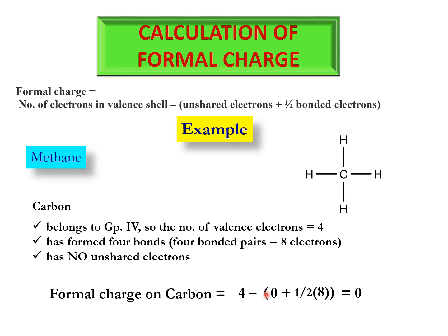All the hydrogens in methane have the same bonding situation as hydrogen in the hydroxyl ion — each has formed one bond. Valence electrons = 1, no unshared electrons, number of bonds = 1. Formal charge = 1 − (0 + 1) = 0. All hydrogens have no formal charge. So the overall charge on methane is zero — it is a neutral molecule, not an ionic species.